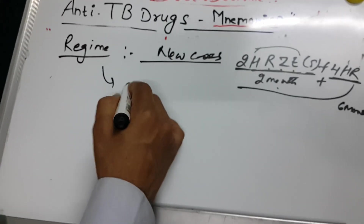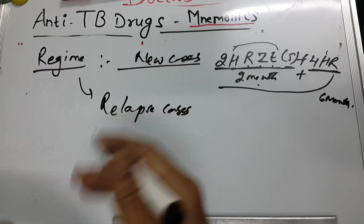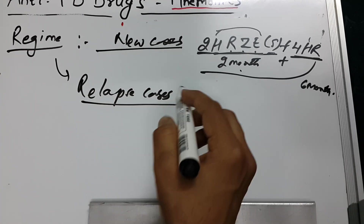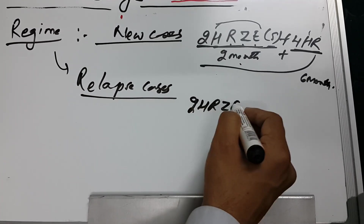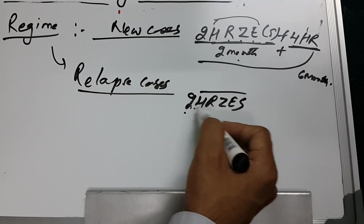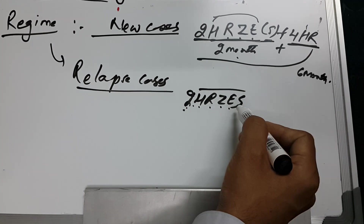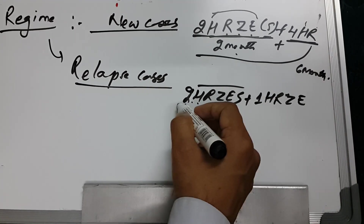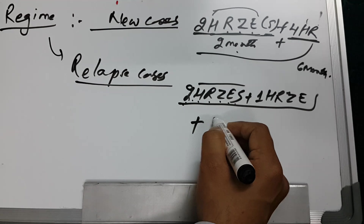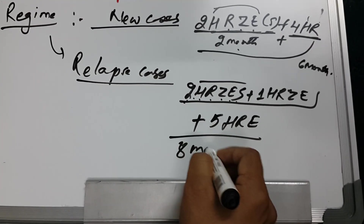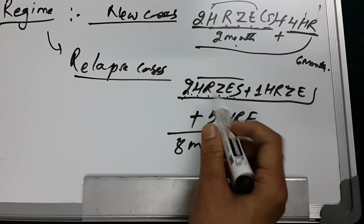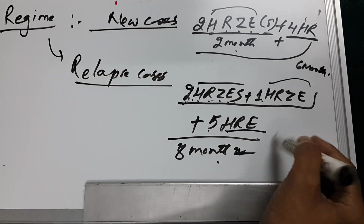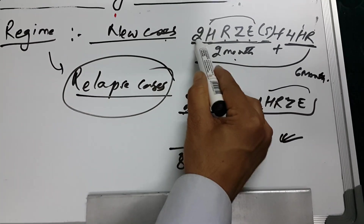For relapse cases — where treatment was incomplete — the regimen is 2HRZEs (all five drugs for 2 months), then 1HRZE (four drugs for 1 month), then 5HRE (three drugs for 5 months). Total duration is 8 months.